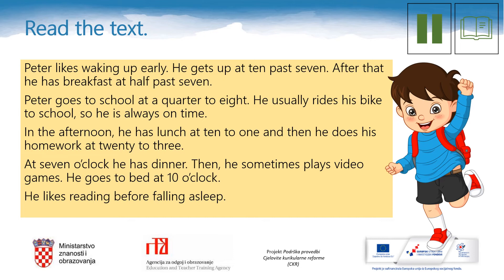We have already helped Peter solve some problems. Let us read about his daily routine now. Peter likes waking up early. He gets up at 10 past 7. After that he has breakfast at half past 7. Peter goes to school at a quarter to 8. He usually rides his bike to school, so he is always on time. In the afternoon, he has lunch at 10 to 1 and then does his homework at 20 to 3. At 7 o'clock he has dinner. Then he sometimes plays video games. He goes to bed at 10 o'clock. He likes reading before falling asleep.